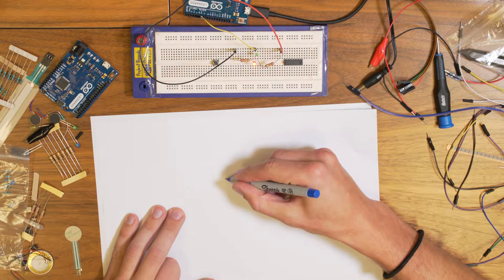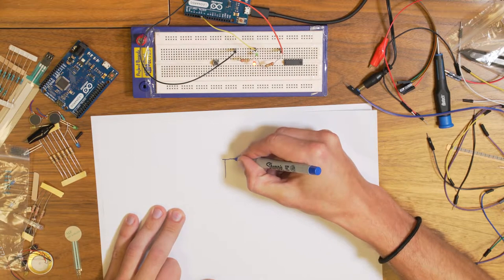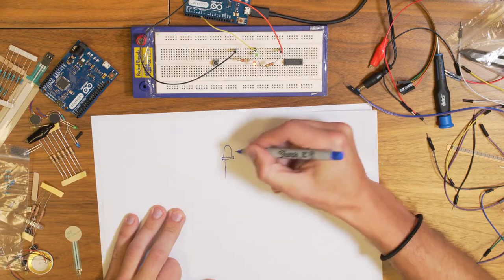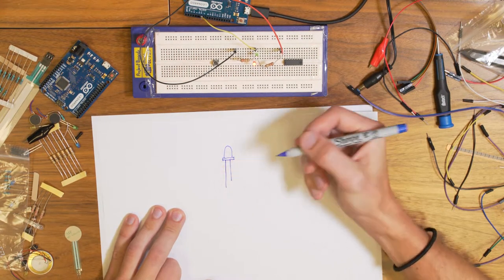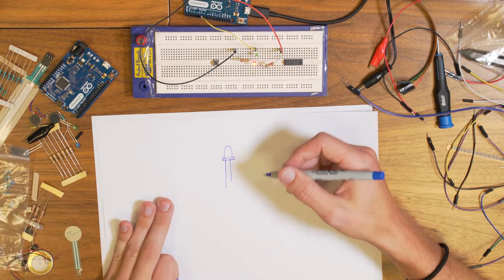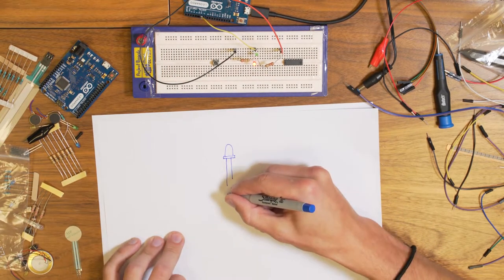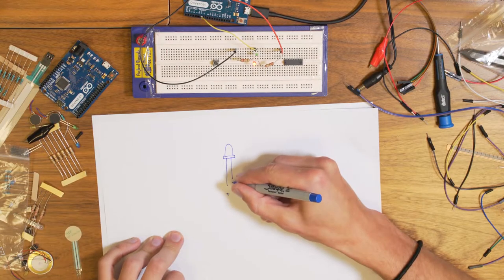And we could draw it like this. And there is one long leg and there is one shorter leg, if you connect an external LED. This part here is the plus side and this is the minus side.